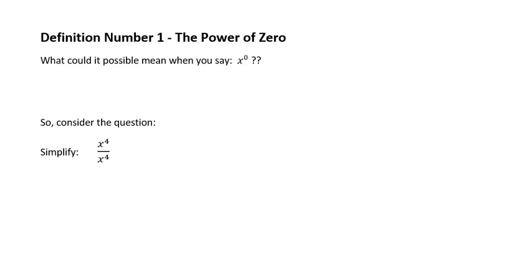Hi graduates and welcome to this lesson, which is on the last part of exponents that you have to know. So far in exponents we've done four laws, and those laws are things that kind of naturally developed because of the way exponents worked. And now we come to something called a definition. Now a definition is different to a law. A law is something that kind of naturally just worked and so it made sense. A definition is something that we as mathematicians had to decide on because we had to make some sort of decision. So let me show you what I mean.